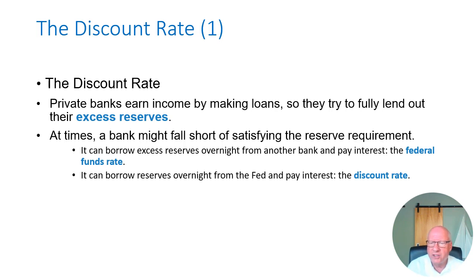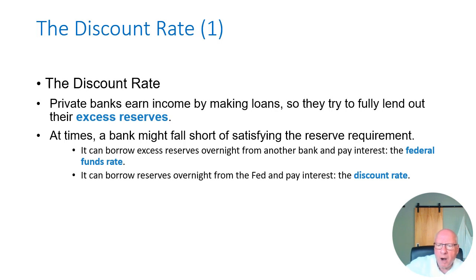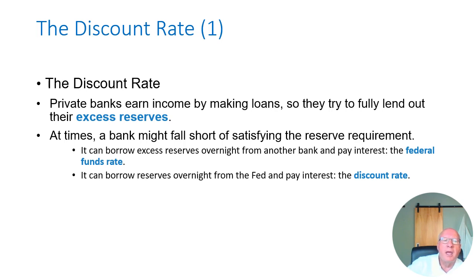Some banks are aggressive lenders and have lent out all their reserves, while other banks still have excess reserves sitting around. The market in which these loans take place is called the federal funds market, and the interest rate charged when a bank with excess reserves lends to a bank short of reserves is called the federal funds rate. Federal funds are excess reserves being borrowed and lent between banks, charged at the federal funds rate.